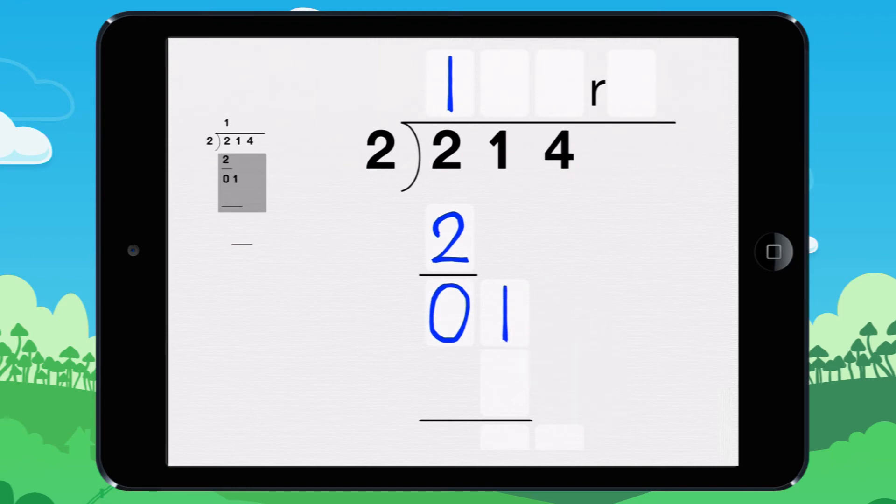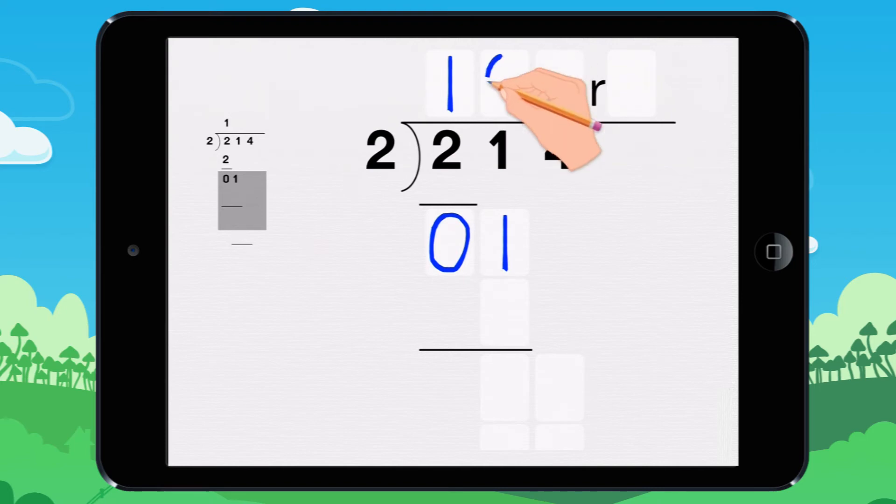Bring down the 1. How many times does 2 go into 1? It goes in 0 times, because 0 times 2 equals 0.